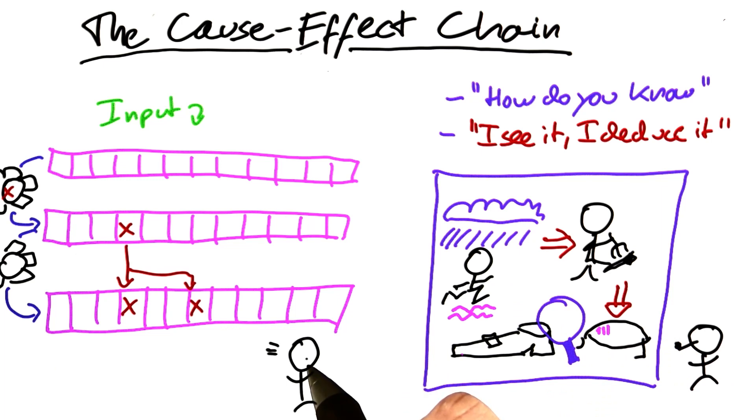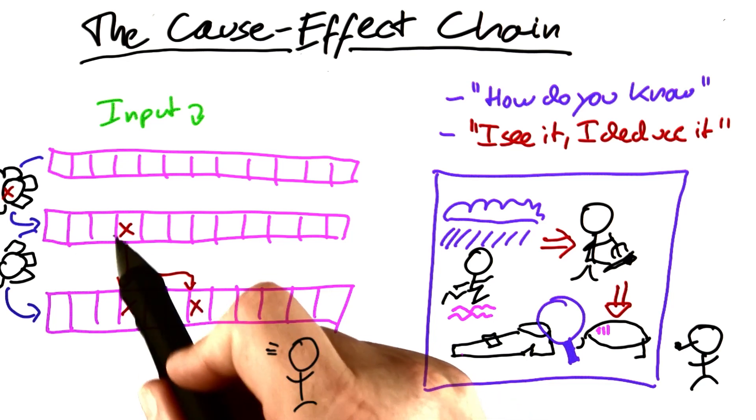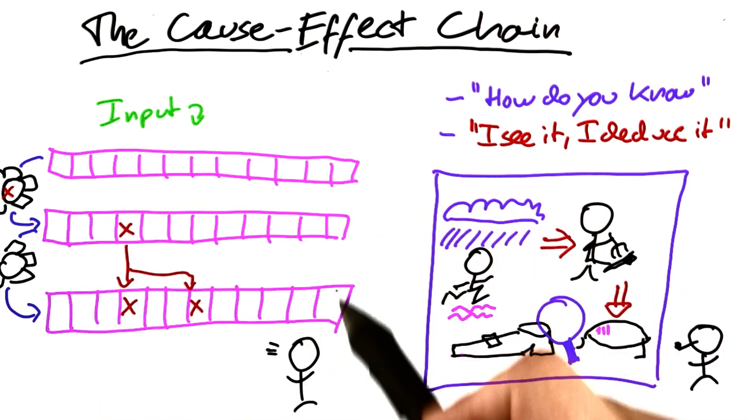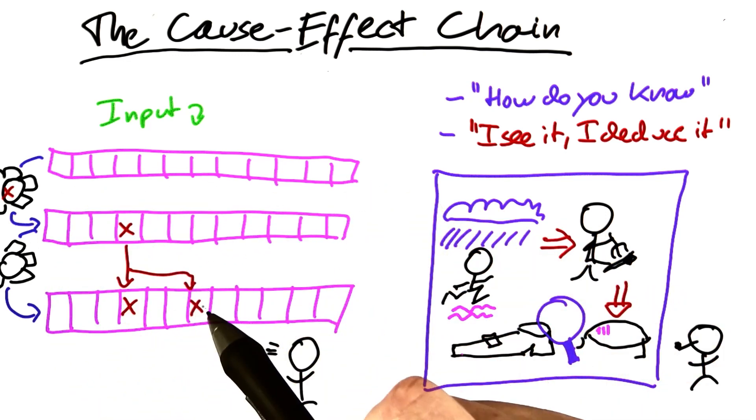Whereas in debugging, so far we have assumed that we can actually observe what has happened before. In a way, we assume that we have perfect control over our program and therefore can observe everything.